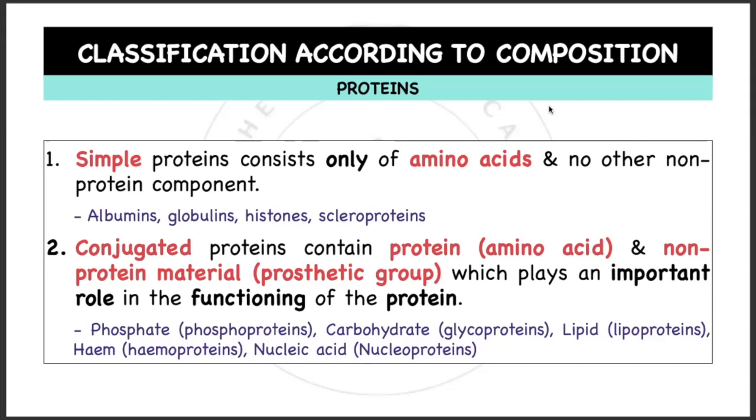Examples would be phosphoproteins such as casein in milk, carbohydrate glycoproteins, lipid lipoproteins found in the membrane, heme for hemoproteins or hemoglobin, and nucleic acid nucleoproteins such as the chromosomes and the ribosomes.